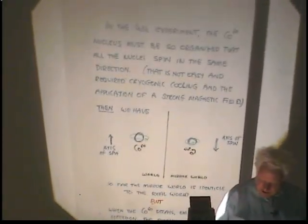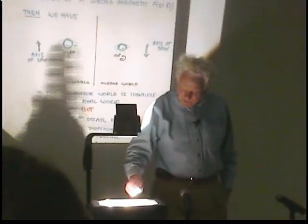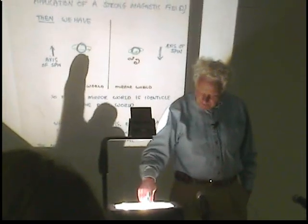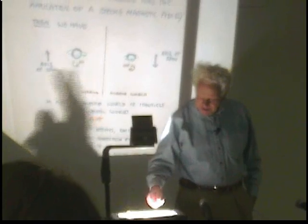One of the experiments that Lee and Yang proposed was carried out by Professor C.S. Wu, an experimental physicist at Columbia, using a radioactive substance, cobalt-60. Here's cobalt-60. Suppose, by a very complicated scheme which we won't discuss in any detail, this cobalt-60 nucleus is spinning just like a top.